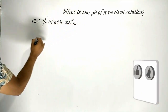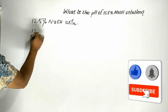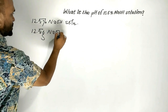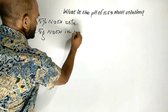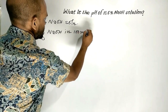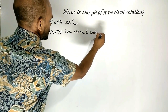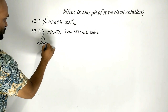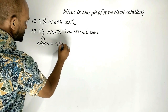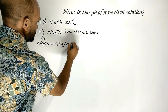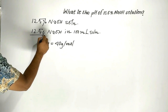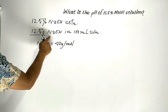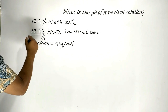12.5% sodium hydroxide solution means 12.5 grams in 100 milliliter solution. We know sodium hydroxide has a molar mass of 40 grams per mole. This amount of 12.5% sodium hydroxide has to be converted to moles.